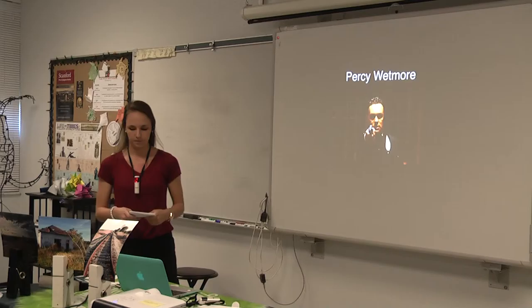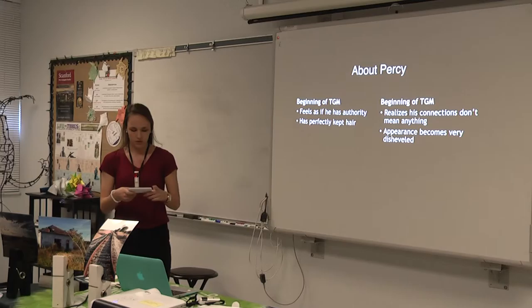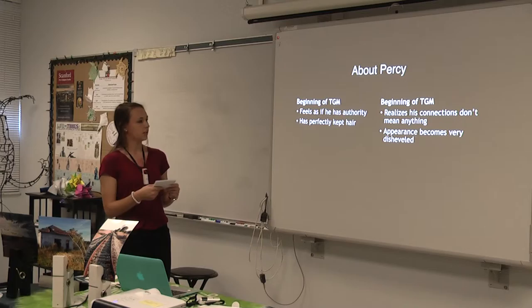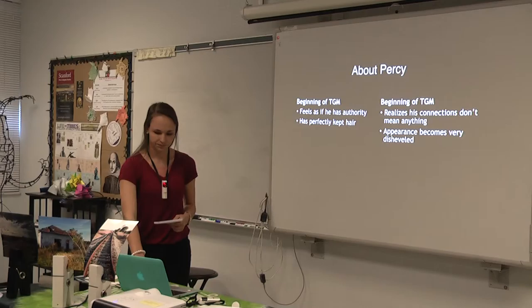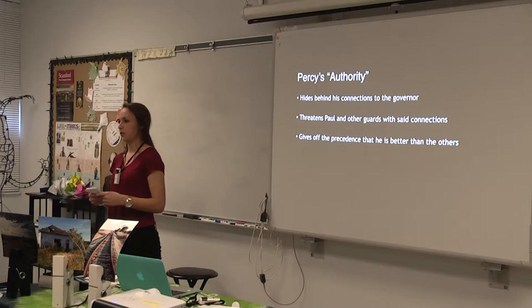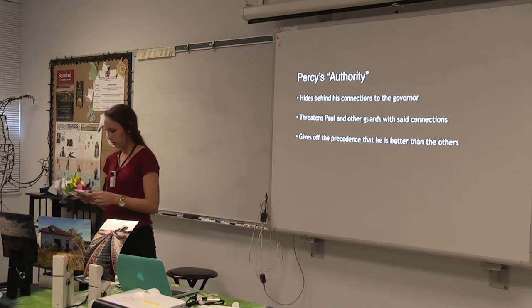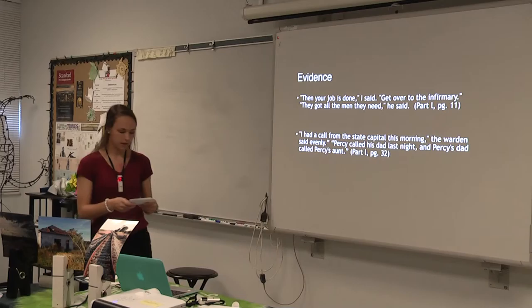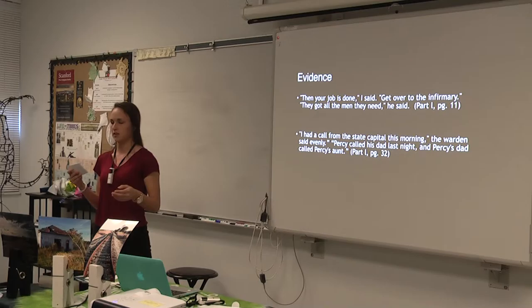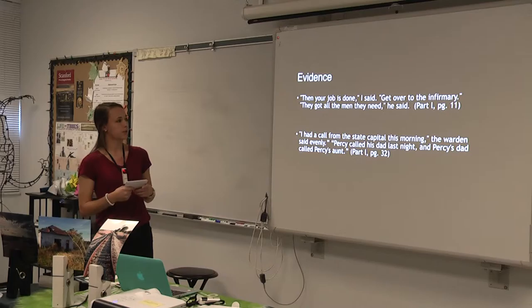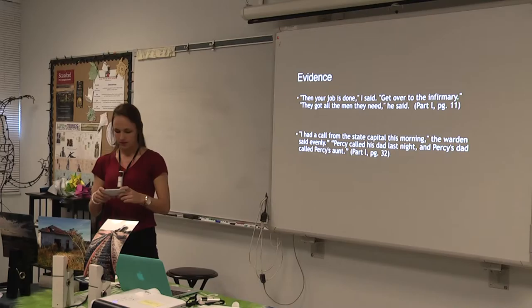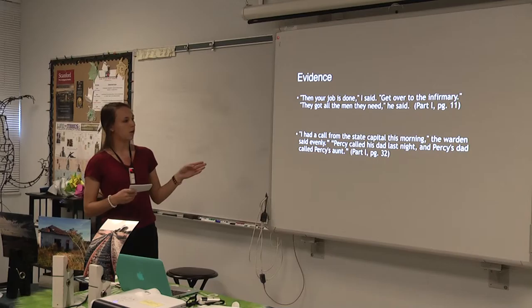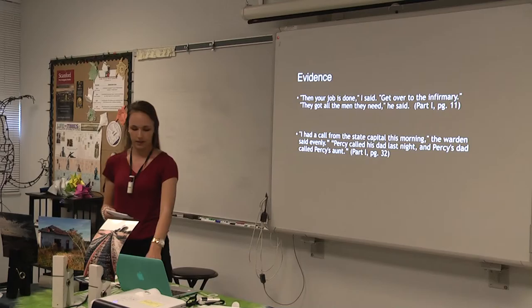Now I'll discuss Percy Wetmore. When analyzing Percy, I focus on his authority and his outer appearance — particularly his hair — which can be directly tied to his sense of control. Percy got his job on E-Block through his connections with the governor, and he constantly hides behind those connections, threatening the other guards with the authority of those he knows. He feels he is better than everyone else and walks around with an arrogance about him. One example shows Percy talking back to Paul, thinking he is above him; another shows Percy making calls to his connections, with Hal calling Paul to say he received a complaint from the state capitol.